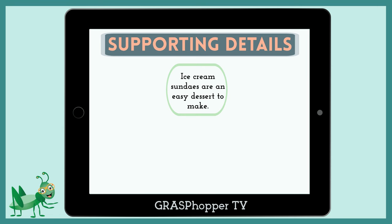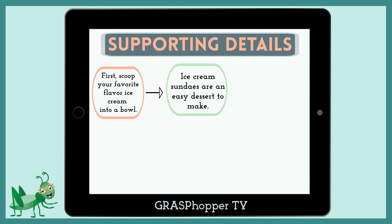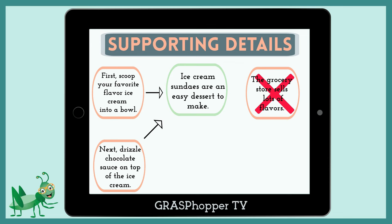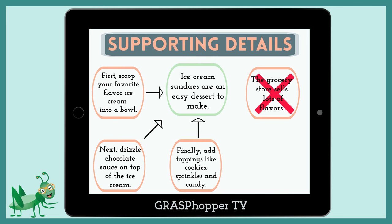Let's check each one. First, scoop your favorite flavor ice cream into a bowl — this explains how to make ice cream sundaes, so it connects to the topic sentence. The grocery store sells lots of flavors — this information is not about making ice cream sundaes; it is off-topic and will be taken out. Next, drizzle chocolate sauce on top of the ice cream — this detail gives an easy step for making an ice cream sundae, so it connects. Finally, add toppings like cookies, sprinkles, and candy — this connects because it's a simple step to make a sundae. Also, don't forget to put lots of toppings on your sundae — this information was already in the paragraph, so this repeated detail will be removed.